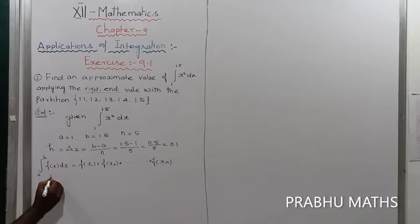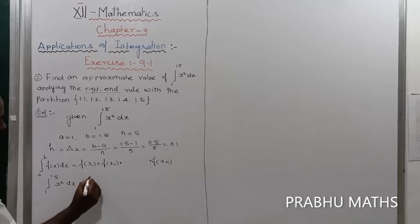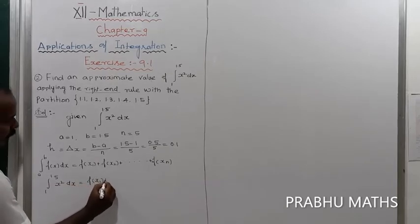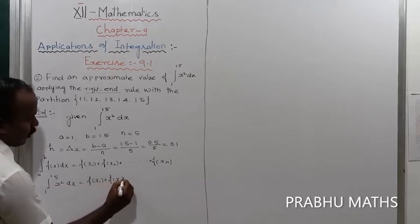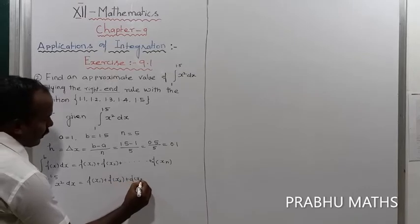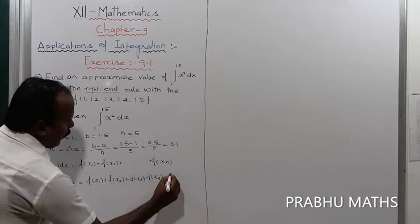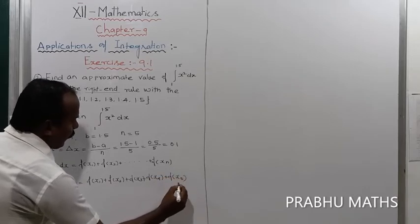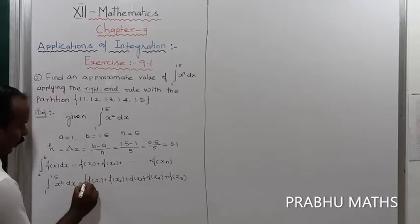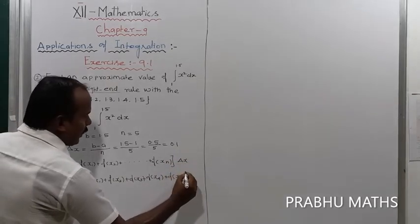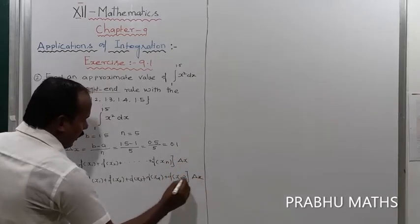So integral of 1 to 1.5, f of x means x square dx, equals f of x1 plus f of x2 plus f of x3 plus f of x4 plus f of x5, into delta x.